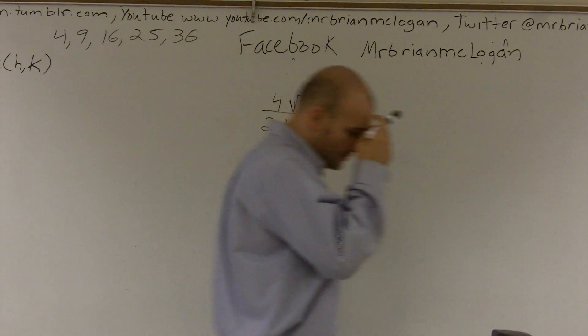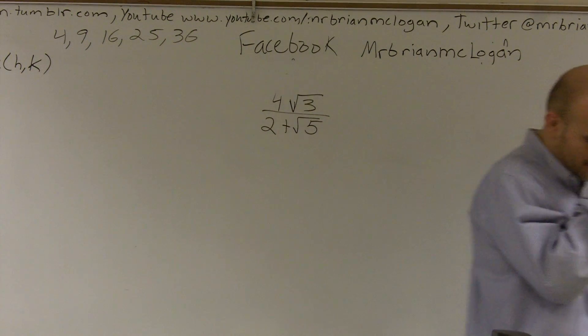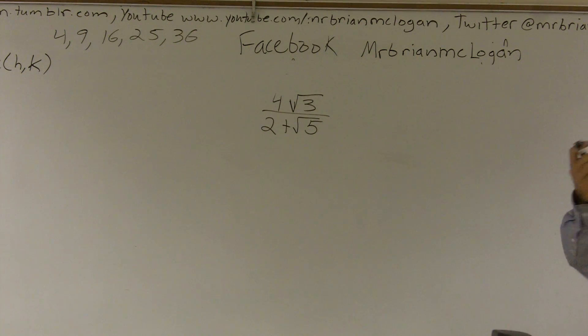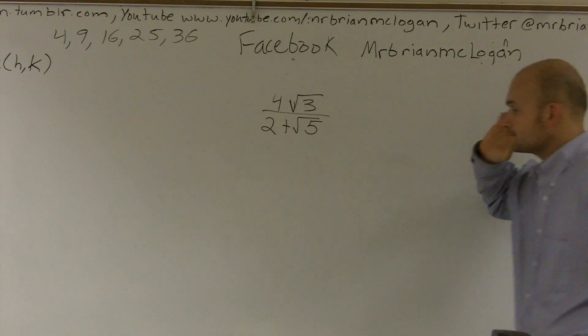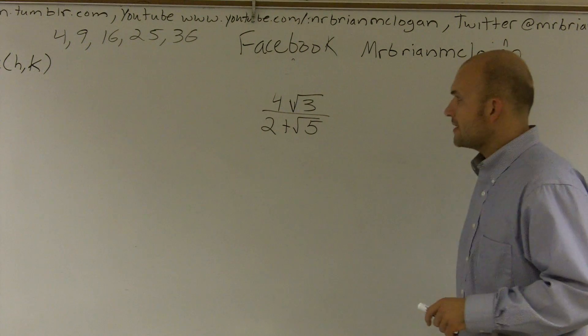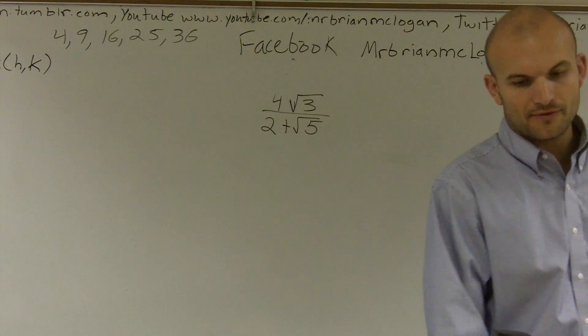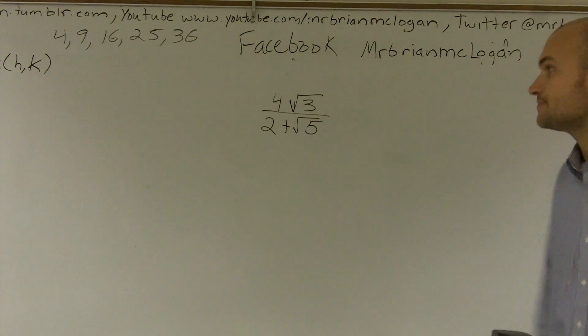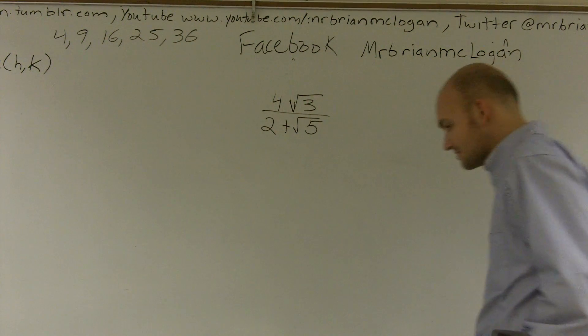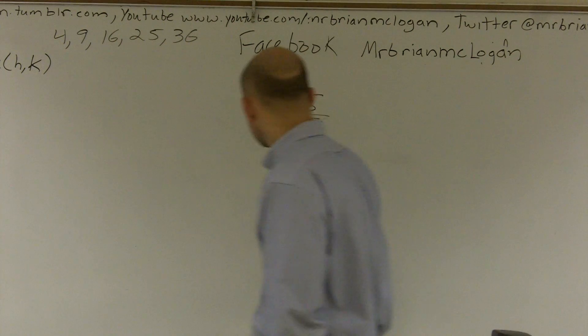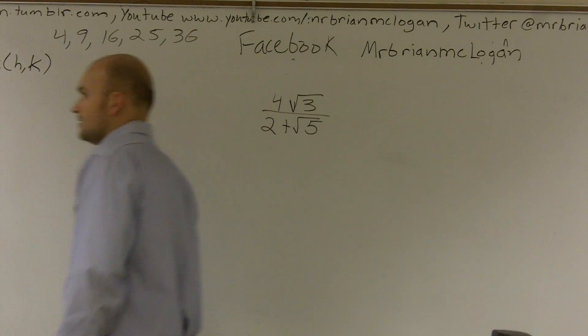Alright, we have a radical quotient here. What we have is radical 4 times the square root of 3, divided by 2 plus the square root of 5.